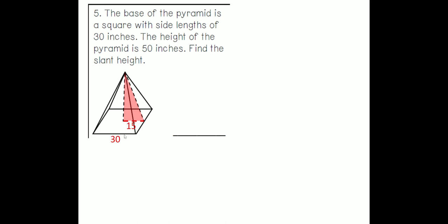So if this whole thing is 30, then this length is going to be 15. The height of the pyramid is 50 inches. So the height is the regular height down the middle. That's 50. Find the slant height. So we're missing the slant height, which if we do the Pythagorean theorem, that's going to be our C.